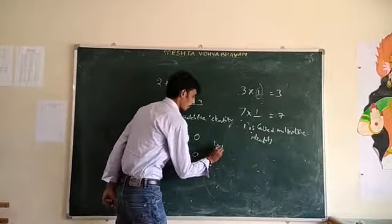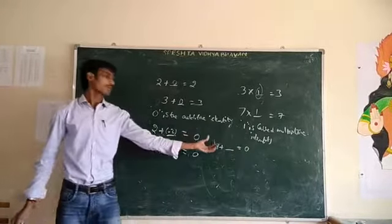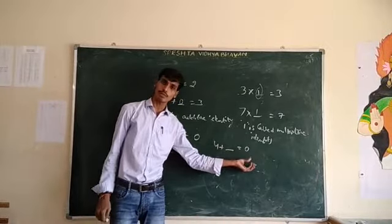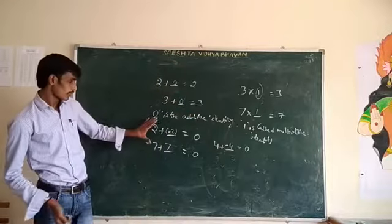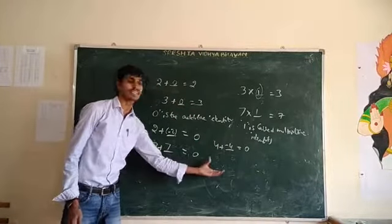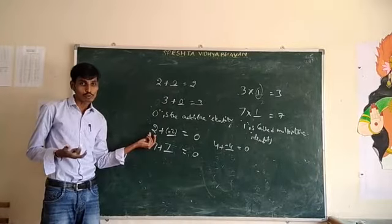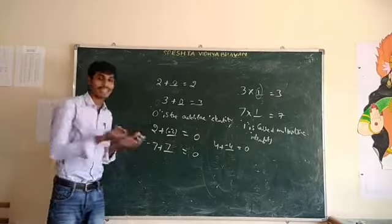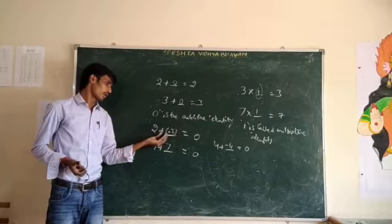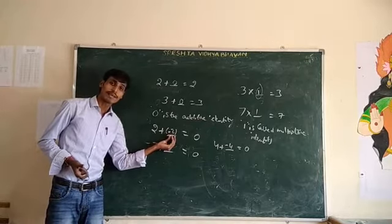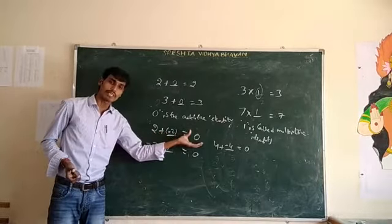Also, 4 plus blank is equal to 0 — minus 4, because 4 plus minus 4 gives 0. Observing these examples: if I take 8, then the number that gives 0 when added is minus 8. So the additive inverse of 8 is minus 8.